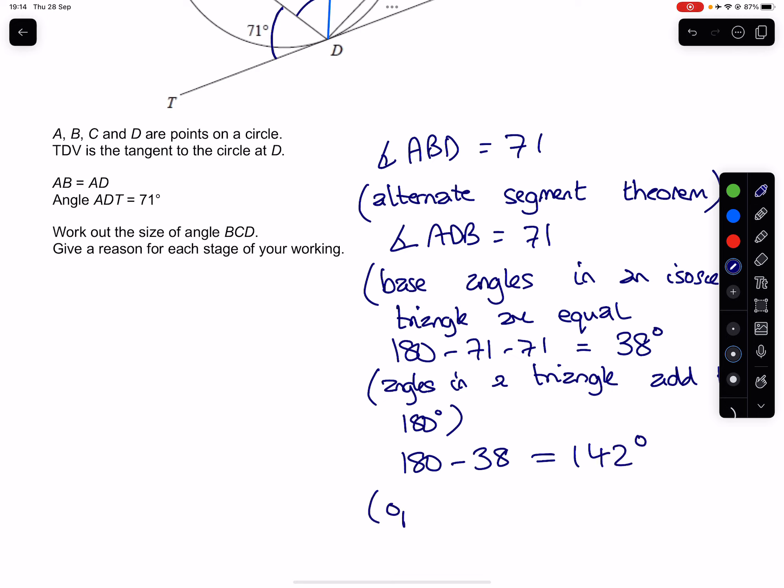And we'd need to state opposite angles in a cyclic quadrilateral add up to 180.